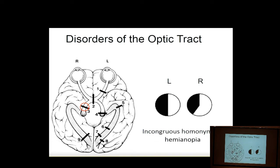Moving back to the optic tract — from our recent lecture on stroke — the visual fibers are rotating in the optic tract; they're not fixed in position. So lesions here tend to give us a contralateral incongruous homonymous hemianopia — it's not identical side to side, and the lesion is closer to the chiasm. The further back we get into the optic radiations, the more identical the visual field deficits become from side to side.